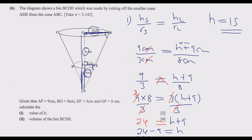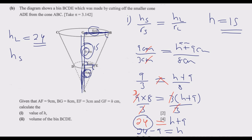So H equals 15 centimeters. Now we know the height of the large cone is H plus 9, which is 15 plus 9, equals 24 cm. The height of the small cone is 9 cm. The radius of the small cone is 3 cm, and the radius of the large cone is 8 cm. These are all the values we need for part 2.